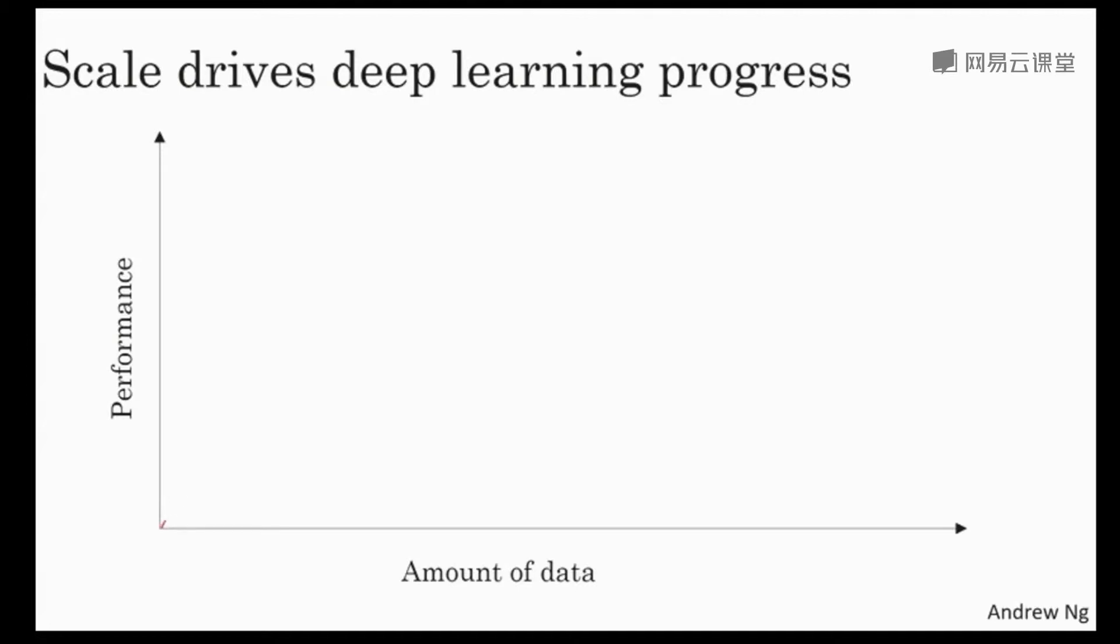Let's say we plot a figure where on the horizontal axis, we plot the amount of data we have for a task. And on the vertical axis, we plot the performance of our learning algorithm, such as the accuracy of our spam classifier or our ad click predictor, or the accuracy of our neural net for figuring out the position of other cars for our self-driving car.